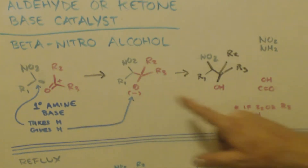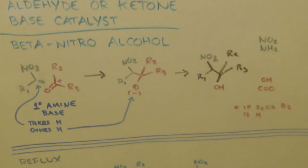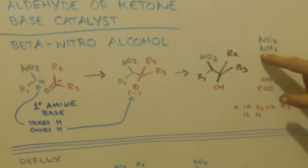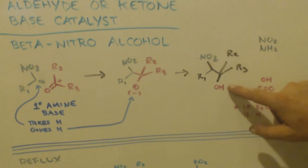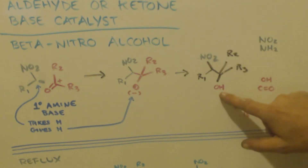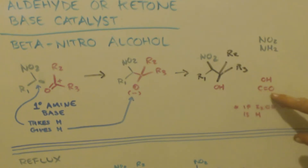When the base gives back the hydrogen, you have your beta nitro alcohol product. You can extract it out of the pot, purify it, and then you have two choices: you can either take the nitro group and reduce it to an amine, since the hydroxy group is already at its lowest reduction state and won't be reduced further.